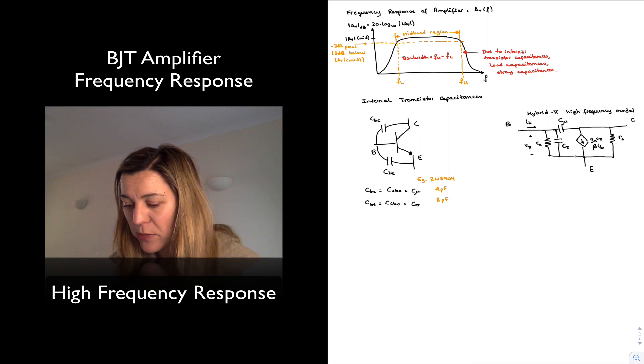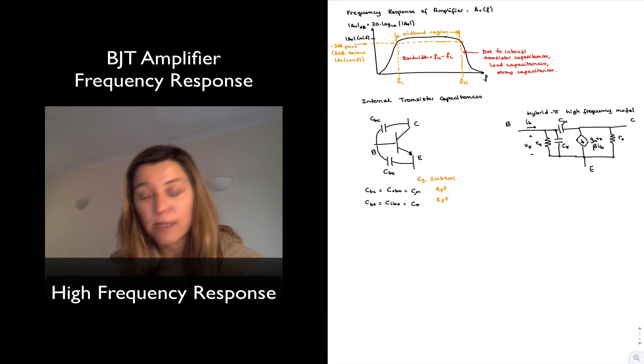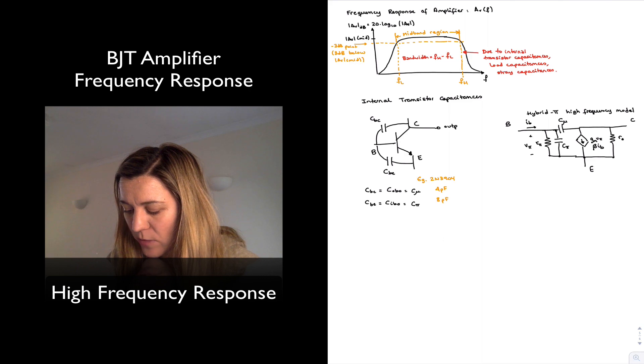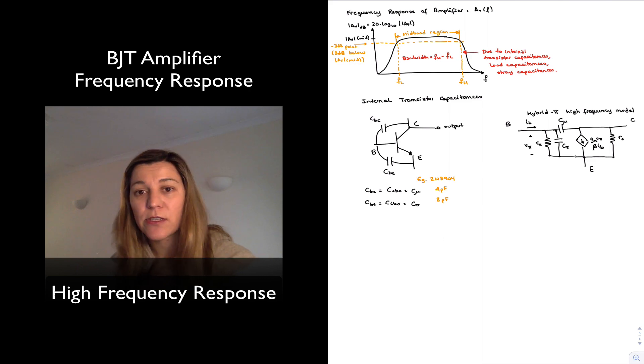Other capacitances, as we mentioned, that may appear is if we have our amplifier. Let's say we're taking the output out of the collector. This is our output. And let's imagine that this is connected to some kind of load...